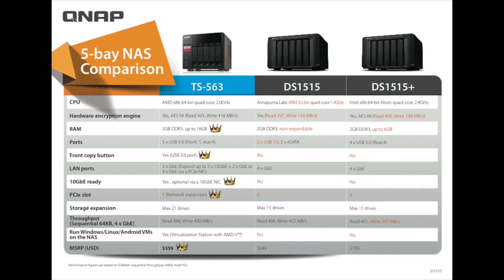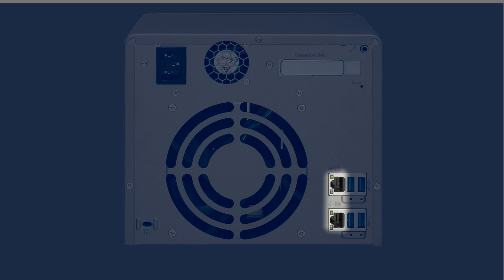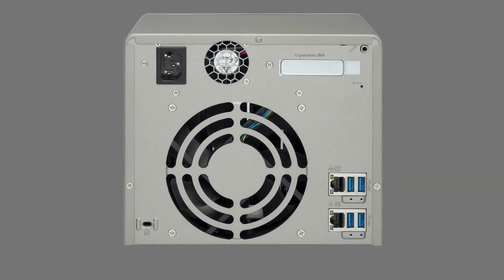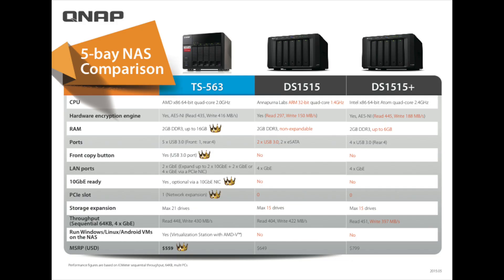Next, let's look at the LAN ports. The QNAP TS-563 comes with 2 gigabit ports, and you can connect a 10 gigabit ethernet connection to these ports with a total of 4 gigabit connections via PCIe NIC cards. The DS-1515 comes with 4 gigabit ethernet connections, and the DS-1515+ also comes with 4 gigabit ethernet connections.